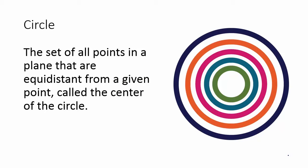Vocabulary. Circle: it is a set of all points in a plane that are equidistant from a given point called the center of the circle. In a circle, the center is right over here, and each point from the circle to the center has the same distance, which we call the radius. The notation used for a circle is usually a circle with a dot in it and then a letter by it, which we say circle with a center of P.